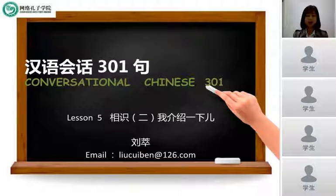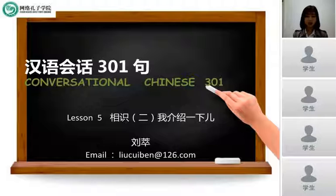Hello everyone, welcome to World Class. 大家好,欢迎来到在线课堂。我是刘老师,很高兴跟大家在这里见面。Today we will continue to learn the textbook Conversational Chinese 301, Lesson 5, 第五课 相识 Making an acquaintance, the second part: let me introduce 我介绍一下。